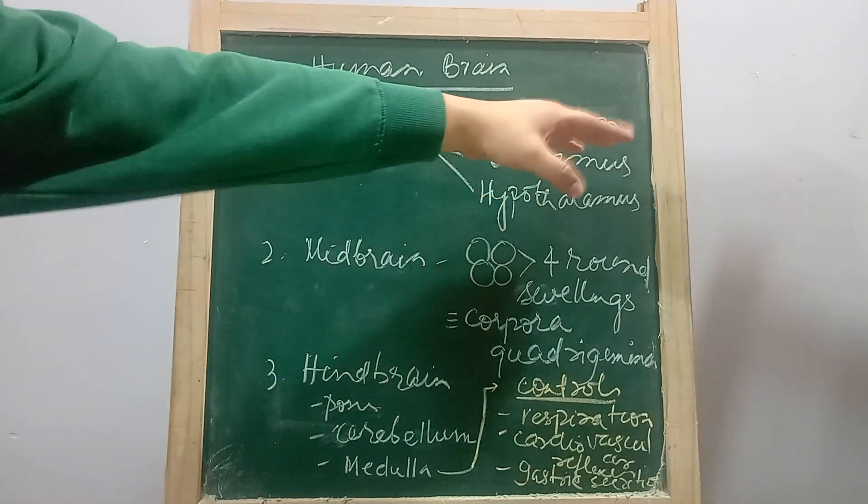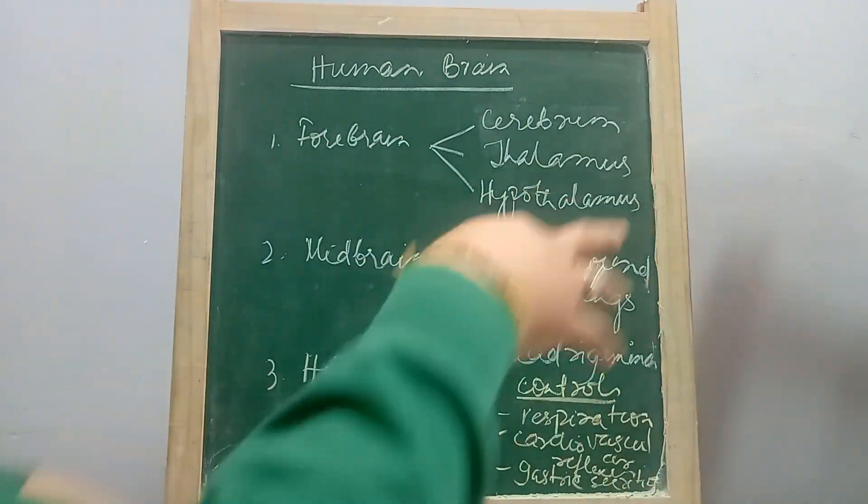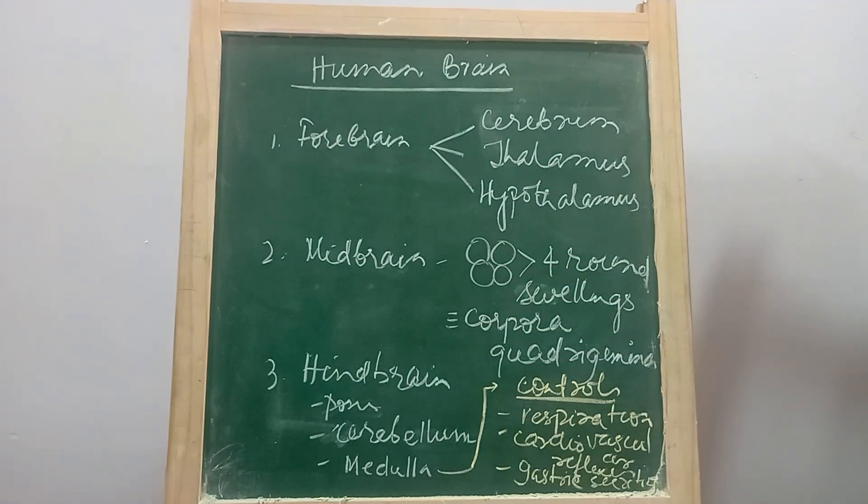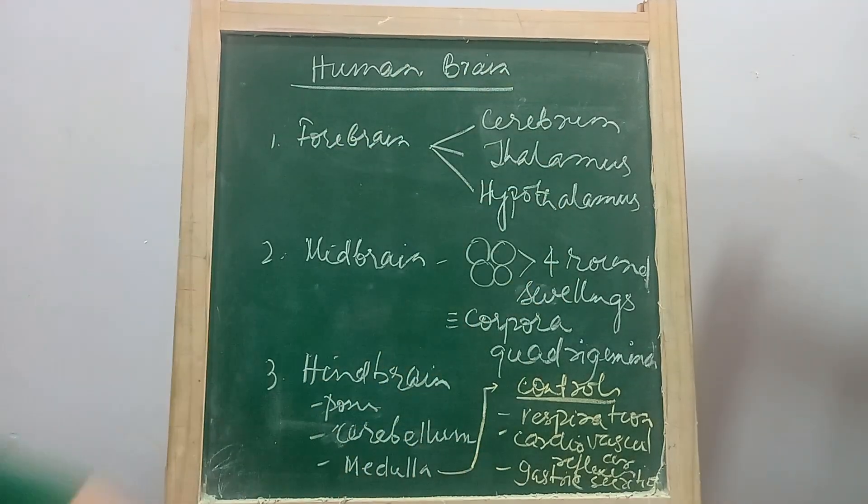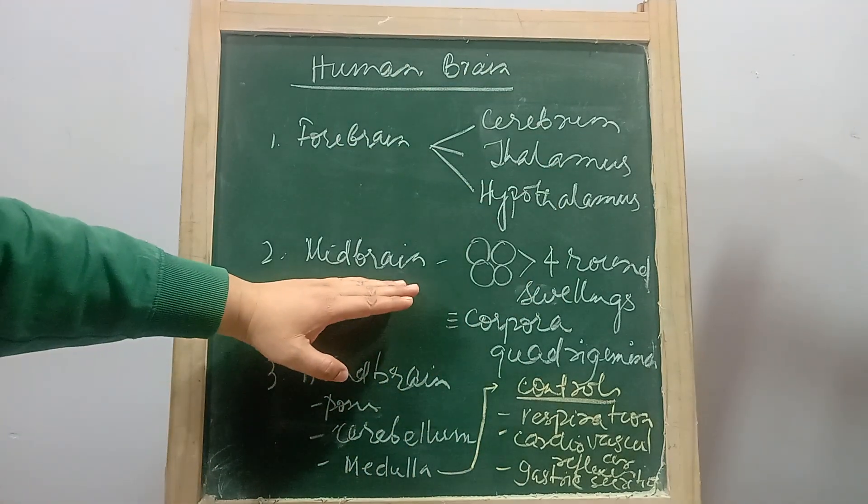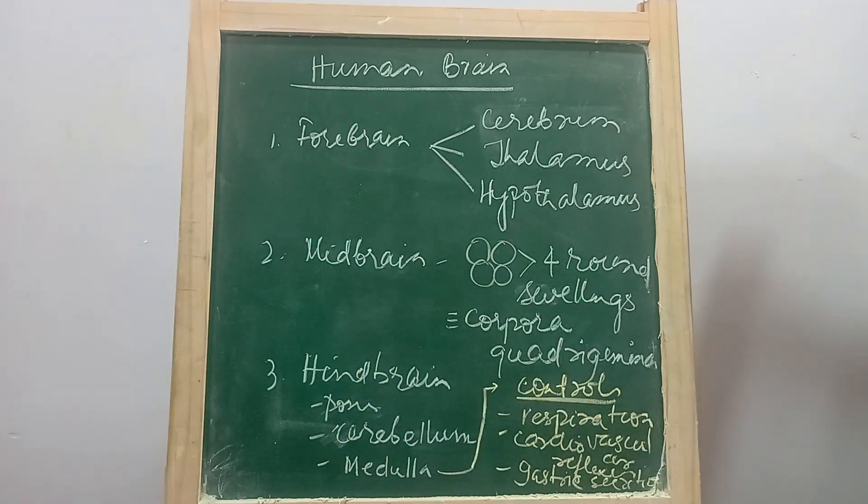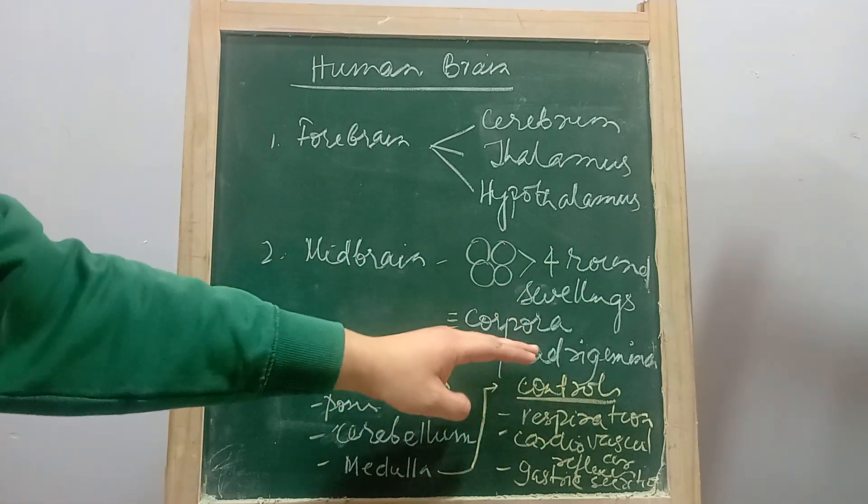The cerebrum is again divided into two parts, two hemispheres: left cerebrum and right cerebrum that are called cerebral hemispheres. The midbrain has four rounder swellings which are called corpora quadrigemina.